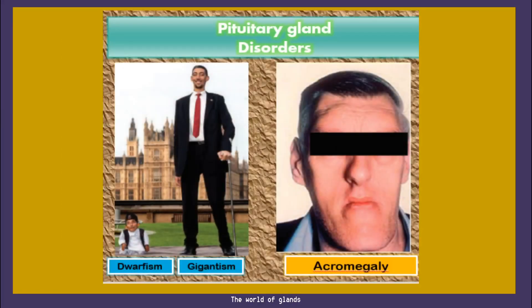Now let's see some disorders related to the pituitary gland. First is dwarfism — it is due to the deficiency of growth hormone during the growing period, which results in stunted growth; there won't be normal growth if growth hormone is lacking. Next is gigantism, which is the reverse of dwarfism: if growth hormone is in excess during the growing stage, that will result in gigantism.